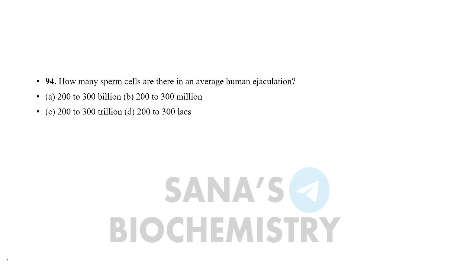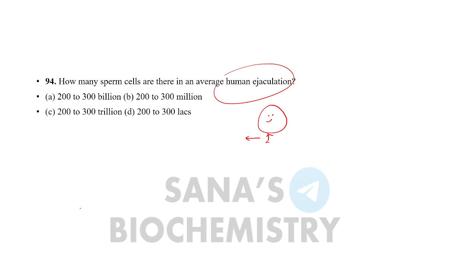Next question: how many sperm cells are there in the average human ejaculation? When a male ejaculates, how many sperm are present? Options are: 200–300 billion, 200–300 million, 200–300 trillion, or 200–300 lakhs.